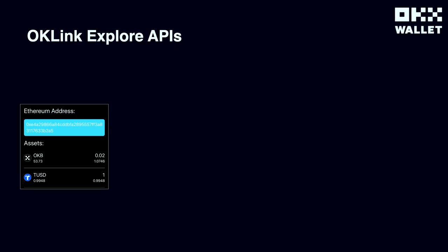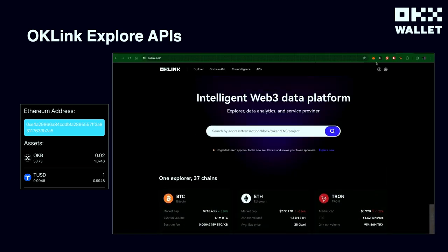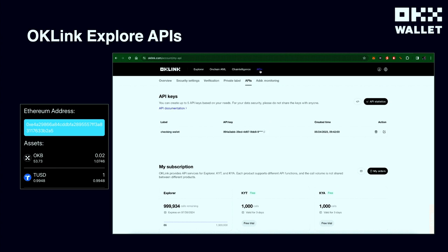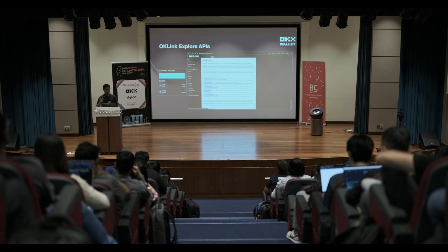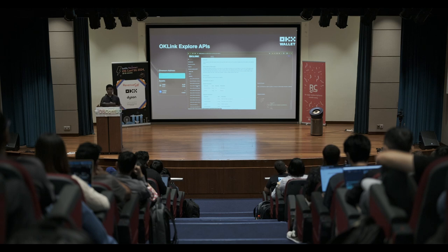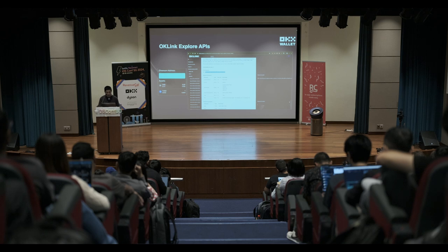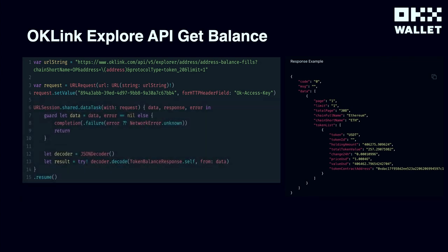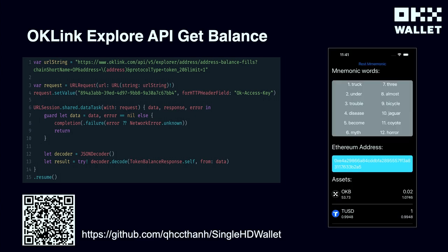Now we already have the Ethereum address. The last step is to track the user's assets on the chain. For the demo today, I'll use the OKLink Explorer APIs — an open platform where you can sign up, get your API key from API management, and explore all available APIs in their documentation. OKLink provides many APIs to view user assets across multiple chains. I'll use the get-balance endpoint to check the balance in my Ethereum address, constructing the API call with the chain short name, the address from step two, and the access key in the header.